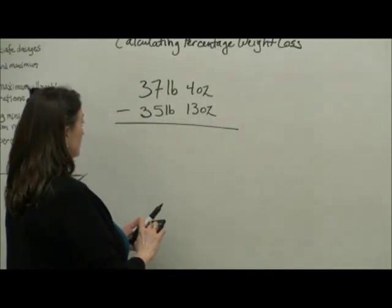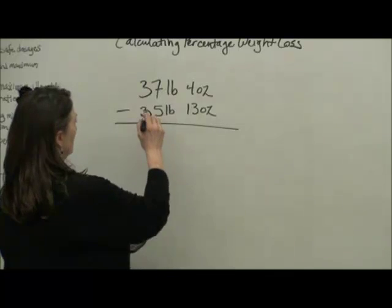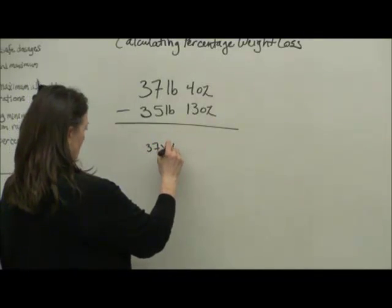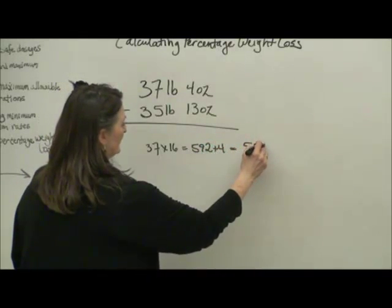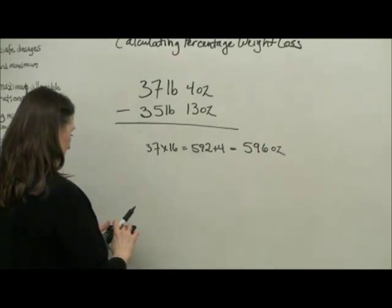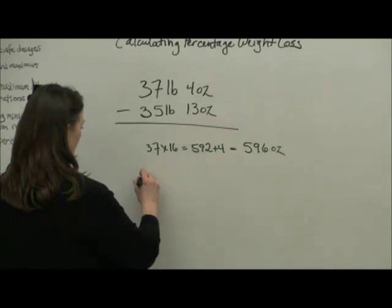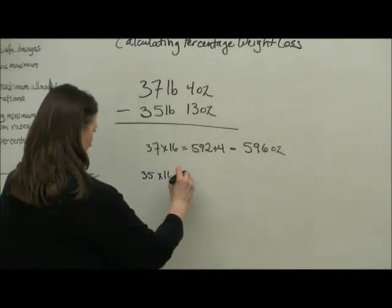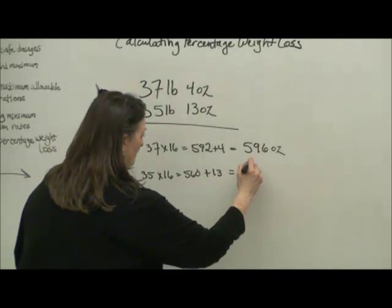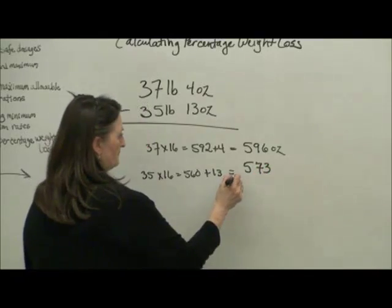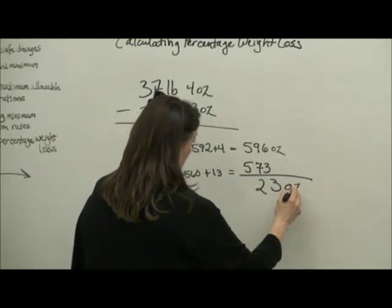Let's convert it all to ounces. 37 times 16 is 592 plus 4, so he was 596 ounces before he got sick. Now he's 35 times 16 equals 560 plus 13, so he now weighs 573 ounces. That's 23 ounces lost, that's a good chunk of change.